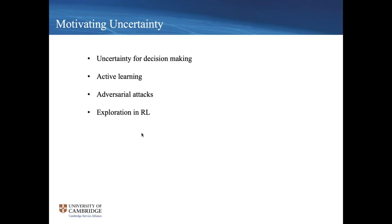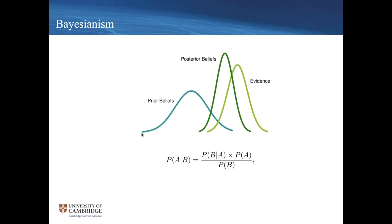There are a couple of different reasons why you might want uncertainty in your AI systems. The example I've given is uncertainty for decision-making. There's also a subfield of machine learning called active learning where uncertainty is useful, it's useful to prevent adversarial attacks, and also to drive the exploration process in reinforcement learning. I'll touch on these last two examples later in the talk.